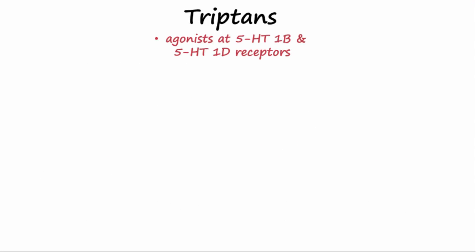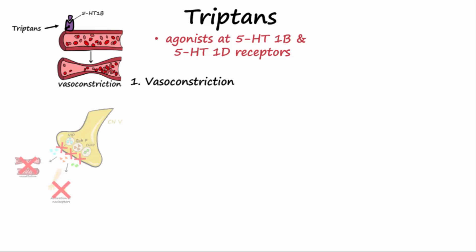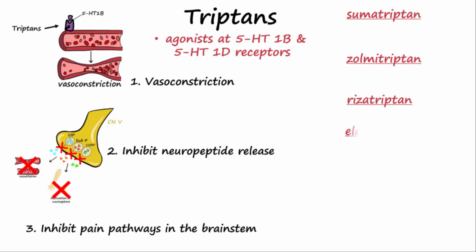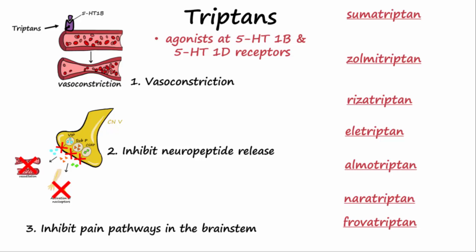Triptans are 5-HT1B and 5-HT1D agonists. Their mechanism involves causing vasoconstriction, inhibiting neuropeptide release, and inhibiting pain pathways in the brainstem. Medications in this class include sumatriptan, zolmitriptan, rizatriptan, eletriptan, almotriptan, naratriptan, and frovatriptan. Sumatriptan can be given subcutaneously, by nasal powder or nasal spray, and orally. Zolmitriptan can be given nasally or orally. The rest are only given orally.